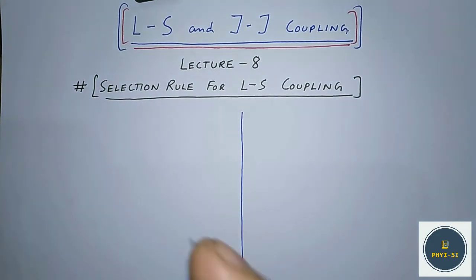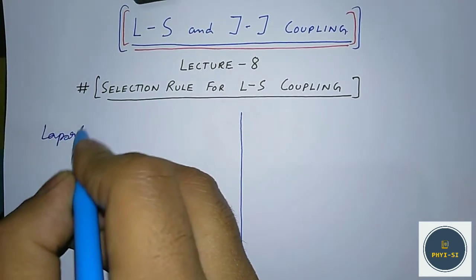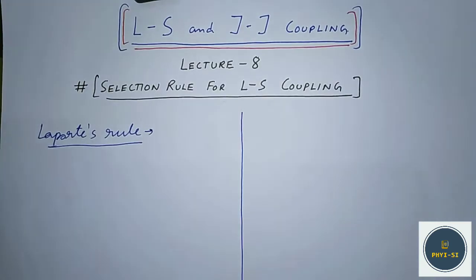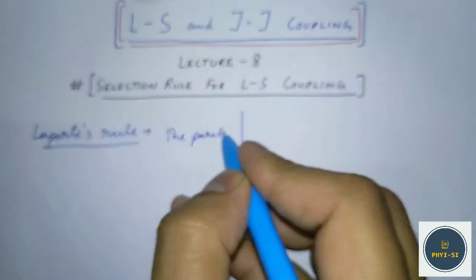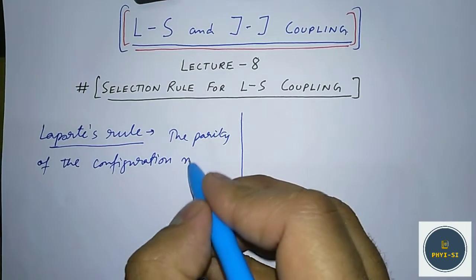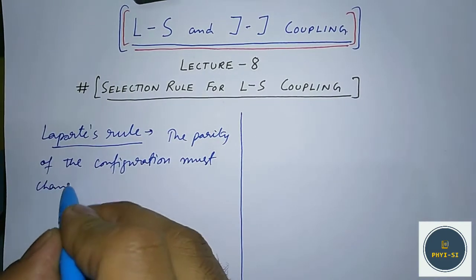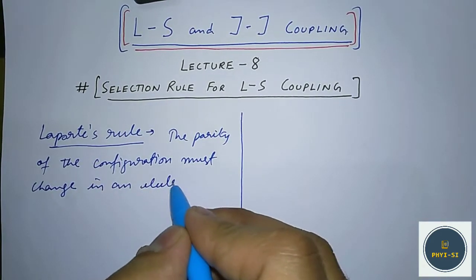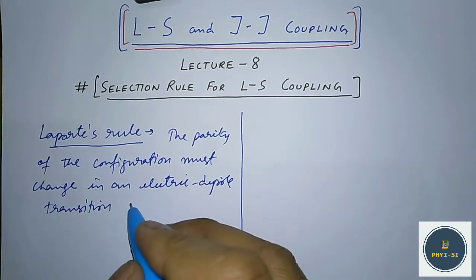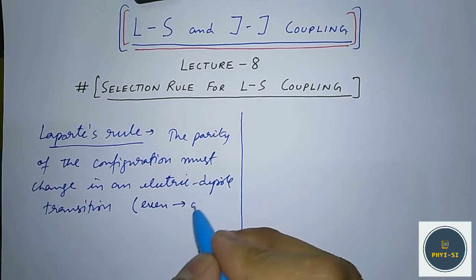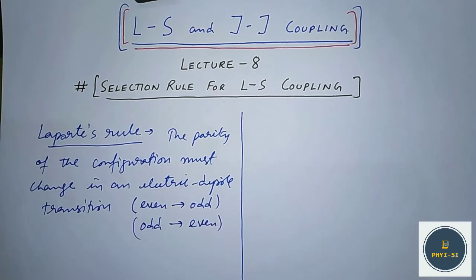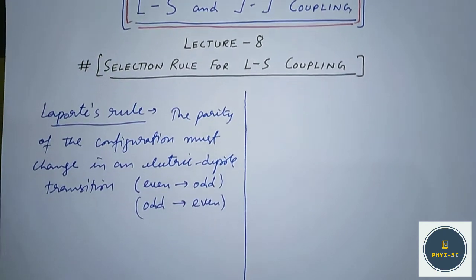These selection rules are based on a very important rule called Laporte's rule. Laporte's rule states that the parity of the configuration must change in an electric dipole transition — if the parity is even, it must change to odd, and if the parity is odd, it must change to even.